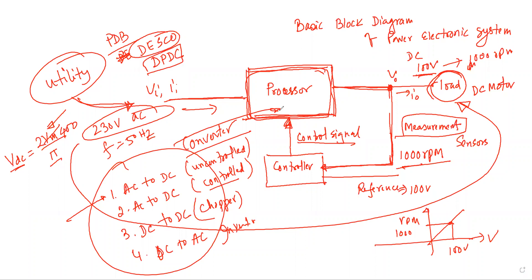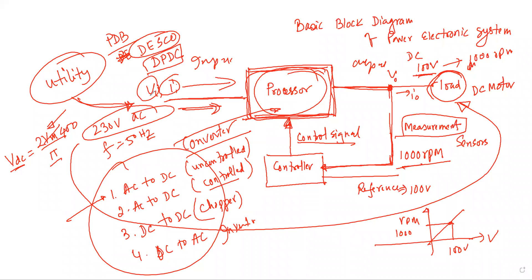As written in the Ned Mohan book, in broad terms: the task of power electronics is to process and control the flow of electric energy, supplying voltage and current to the load in a form that is optimally suited for the user. You are controlling the flow of electric energy from the input side to the output side to meet the demand of the user.